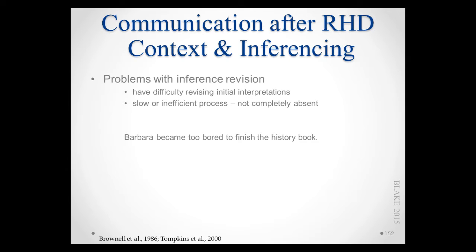They do tend to have difficulty with inference revision — when you have an initial idea of what something means and then that interpretation changes. This process of inference revision is not completely absent, but it is slow or inefficient, kind of like the suppression process previously covered. It is not that they cannot suppress and select the right interpretation, but they are slow at it, and that in turn impairs general comprehension.